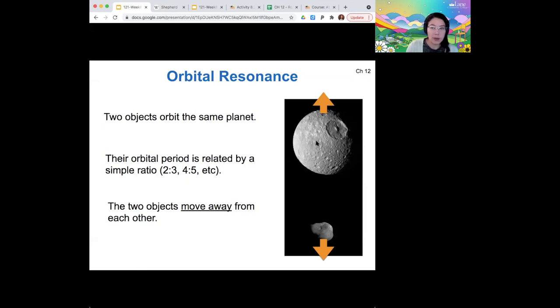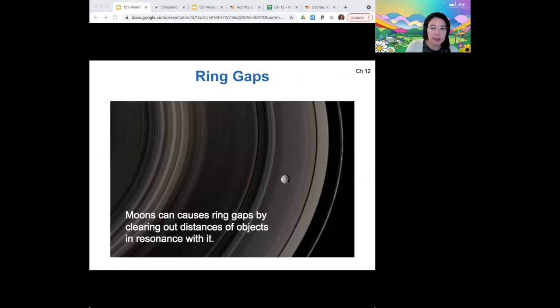So that's my sort of maybe intuitive argument for how this works. The net result of this is that moons can cause ring gaps by sort of clearing out those distances by pushing away the objects that are in the distances that are in resonance with it. So at specific orbital distances, those will have a specific orbital period. If that period is in resonance with the moon's period in some way, then that distance will get cleared of material.